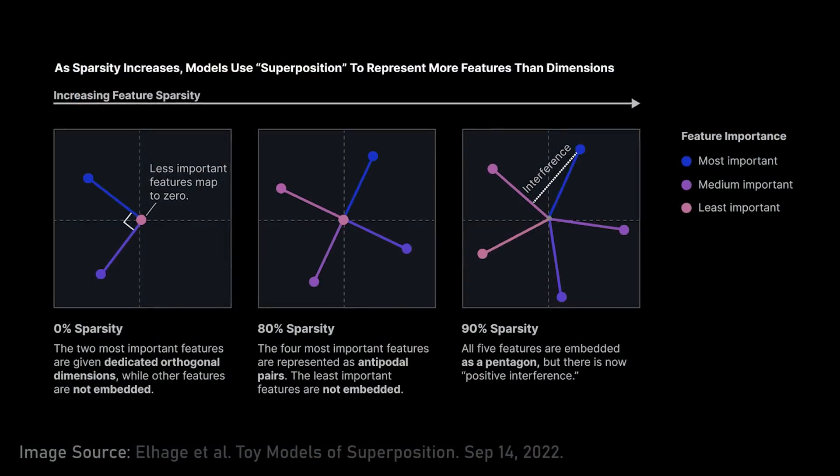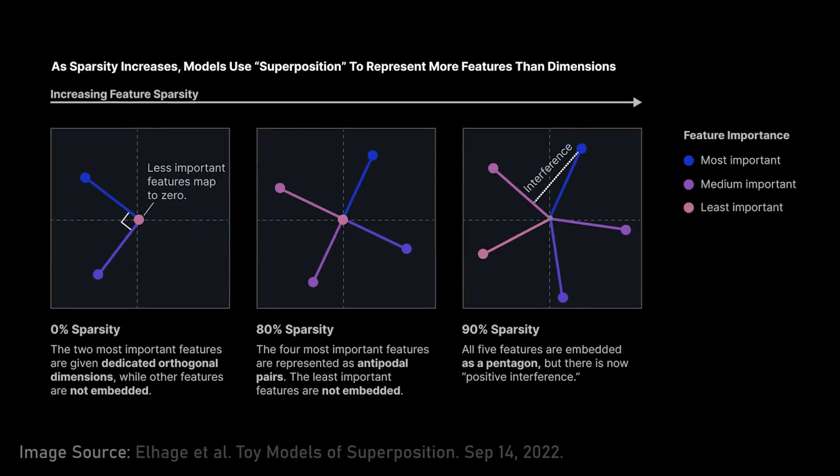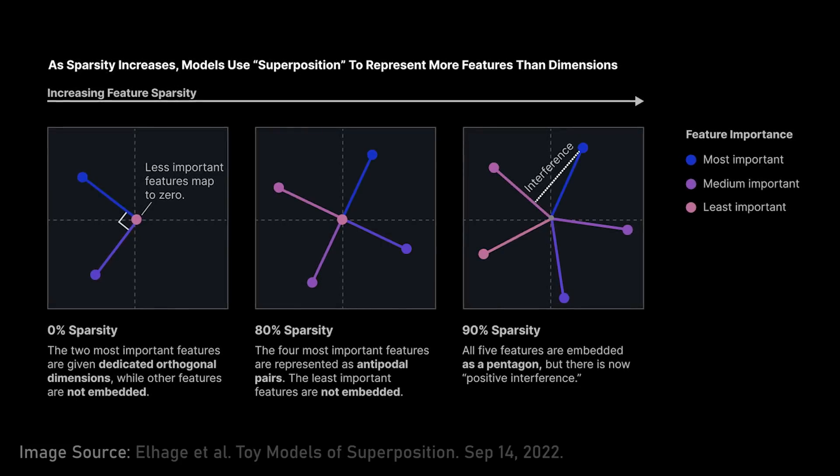So another interesting hypothesis is the superposition hypothesis. Can you describe what superposition is? So earlier we were talking about word2vec, and how maybe you have one direction that corresponds to gender and maybe another that corresponds to royalty, and another one that corresponds to Italy, and another one that corresponds to food and all of these things. Well, these word embeddings might be 500 dimensions, a thousand dimensions. And so if you believe that all of those directions were orthogonal, then you could only have 500 concepts.